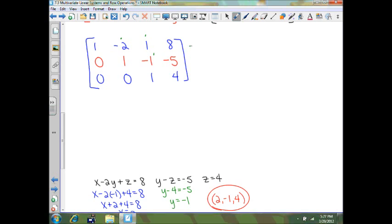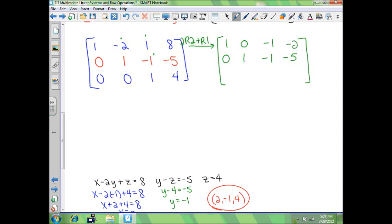So the way we do that, we're going to take our top row, so that's the row we're going to change. We're going to multiply our second row by 2 and add that to row 1. So we'll have in the middle row 0, 1, negative 1, and a negative 5. In the top row, 0 times 2 is 0, plus 1 is 1. 2 times 1 is 2, plus negative 2 is 0. 2 times negative 1 is negative 2, negative 2 plus 1 is a negative 1. 2 times negative 5 is negative 10, plus 8 is negative 2.